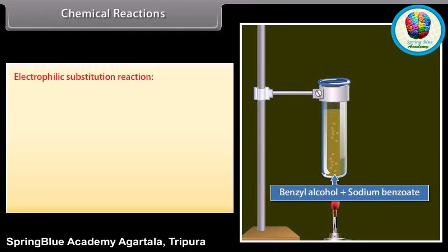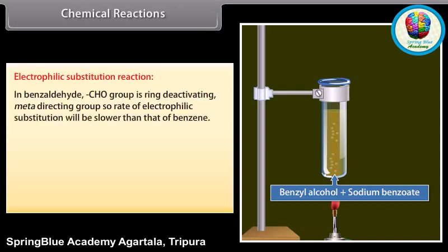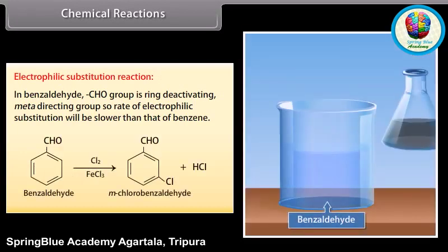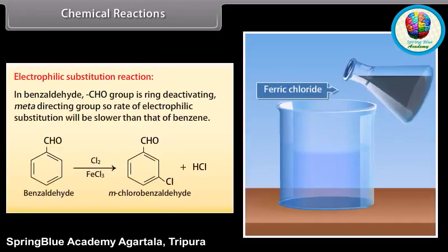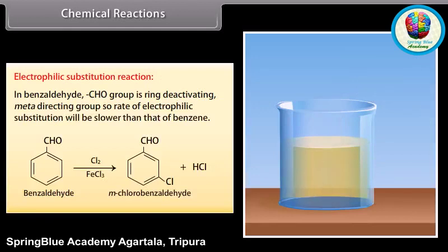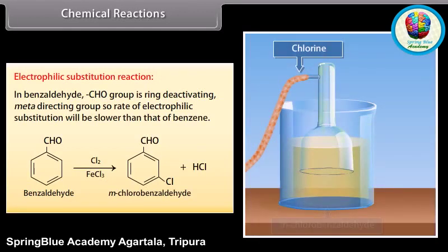Electrophilic substitution reaction: in benzaldehyde, the aldehyde group is a ring-deactivating, meta-directing group, so the rate of electrophilic substitution will be slower than that of benzene. Benzaldehyde reacts with chlorine and ferric chloride solution to form meta-chlorobenzaldehyde and hydrochloric acid.